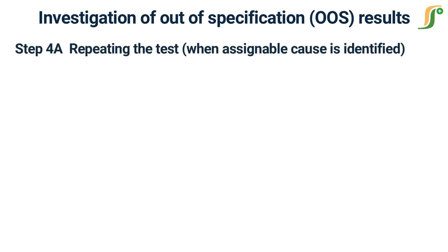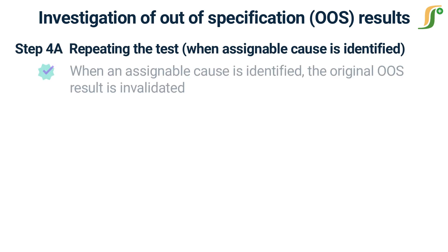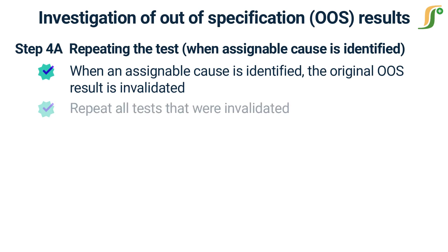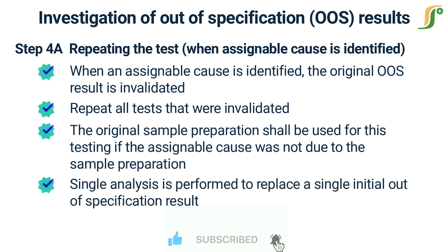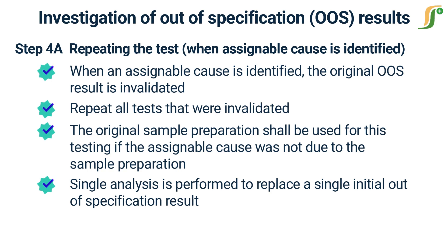Step 4a: Repeating the test when an assignable cause is identified. When an assignable cause is identified by the results of either the initial or formal out-of-specification investigation, the original OOS result is invalidated. You should repeat all tests that were invalidated. The result will replace the original invalidated results only. The original sample preparation shall be used for this testing if the assignable cause was not due to sample preparation. A single analysis is performed to replace a single initial out-of-specification result. For example, if an assignable cause has been identified for one of ten results from a content uniformity test, or one of six results from a dissolution test, you should test one additional dosage unit for the content uniformity test, or perform a dissolution test using one dosage unit.